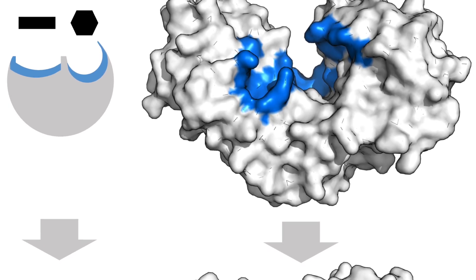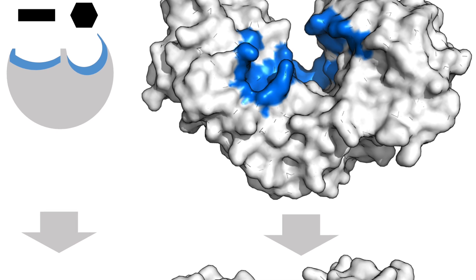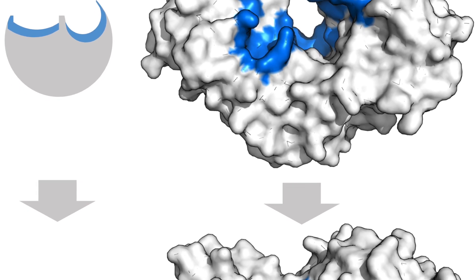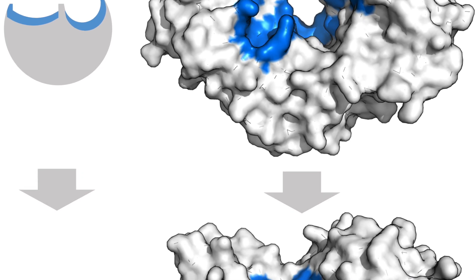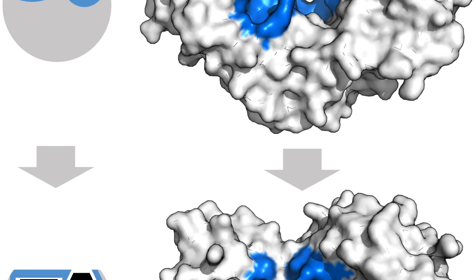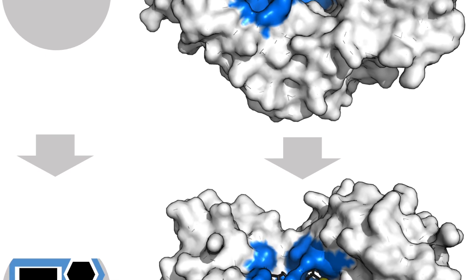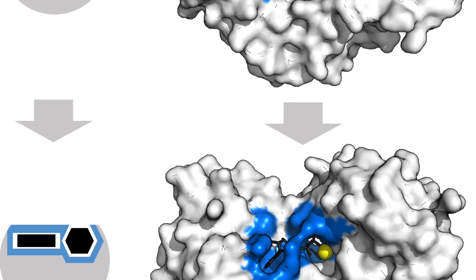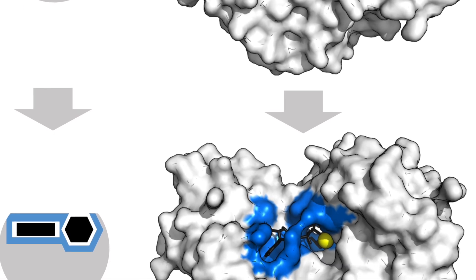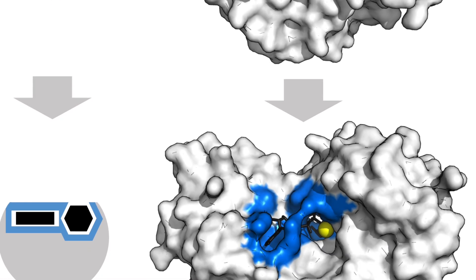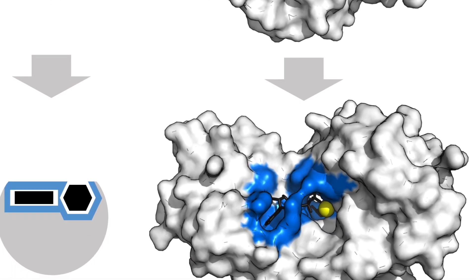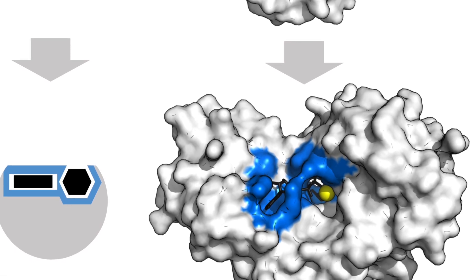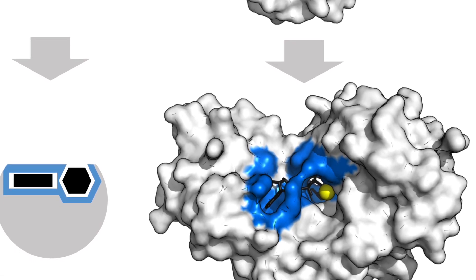Enzymes can build up large molecules from smaller ones — for example, they can make glycogen from glucose. They can also break down large molecules into smaller ones, such as breaking down insoluble molecules into soluble ones, which is used in digestion. They can also change one molecule into another, such as changing glucose into fructose. Importantly, they are not used up in the reaction — they simply speed it up.